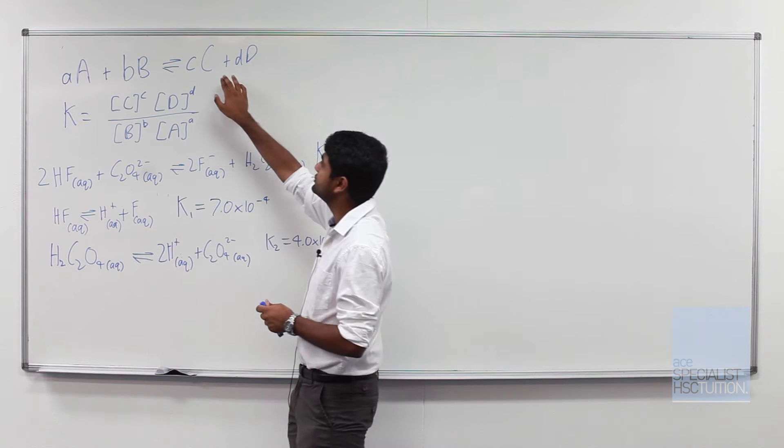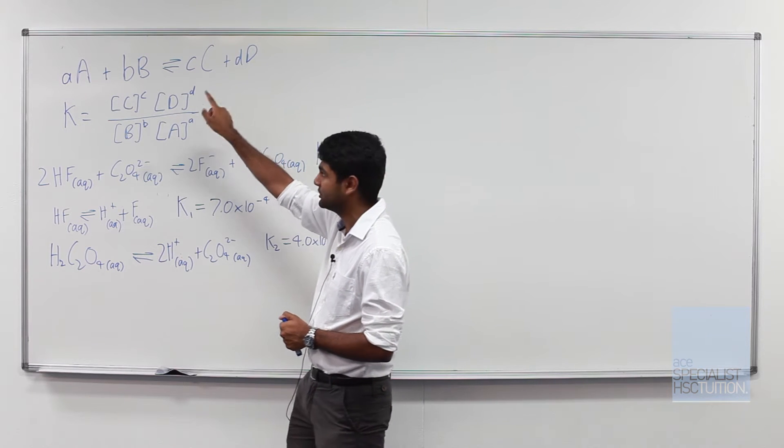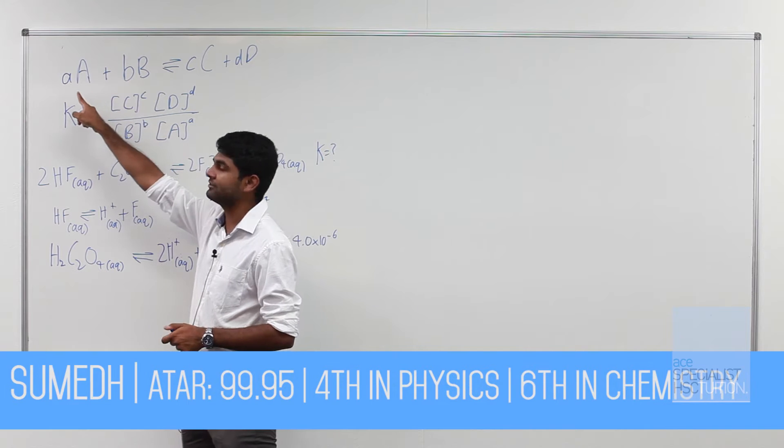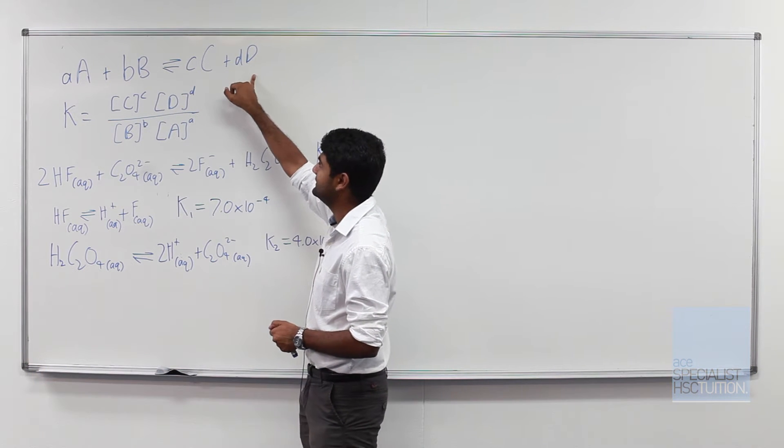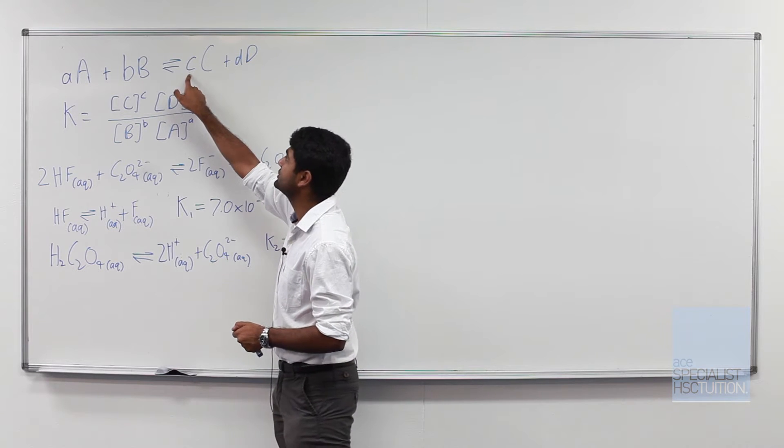Now here we have your general equation for an equilibrium question where we have reactants A and B with a molar ratio of small a and small b reacting to form big C big D with the molar ratio of C and D.